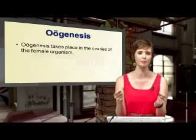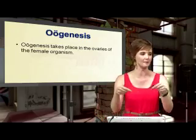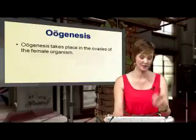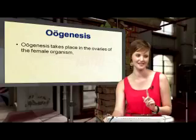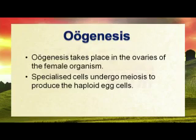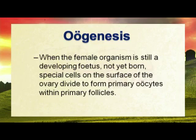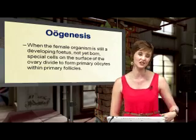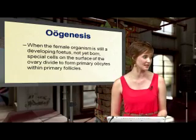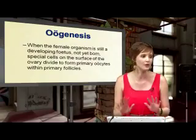If both ovaries release an egg at the same time and both get fertilized, the result is twins — but not identical twins, because it's two separate eggs and two separate sperm cells. Now, specialized cells undergo meiosis to produce the haploid egg cells. When the female organism is still a developing fetus, special cells on the surface of the ovary divide to form primary oocytes within the primary follicles. You should notice a difference here: males only start spermatogenesis at puberty, whereas in females, oogenesis has already started before you are even born.